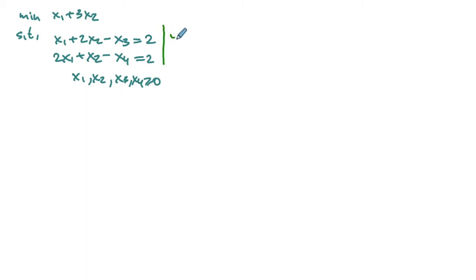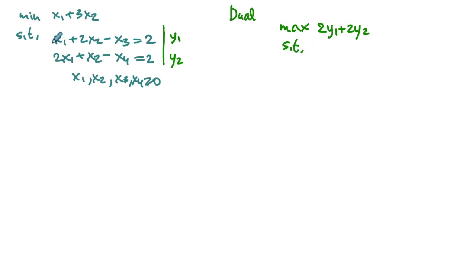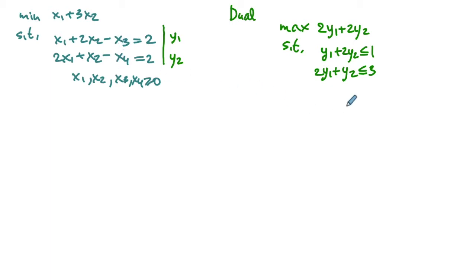We introduce dual variables y1 and y2 corresponding to the first and second constraints respectively. They're unrestricted in sign because we have equality constraints. The dual is: maximize 2y1 plus 2y2, subject to y1 plus 2y2 ≤ 1, then 2y1 plus y2 ≤ 3, and then negative y1 ≤ 0 and negative y2 ≤ 0. We number these constraints 1 through 4.